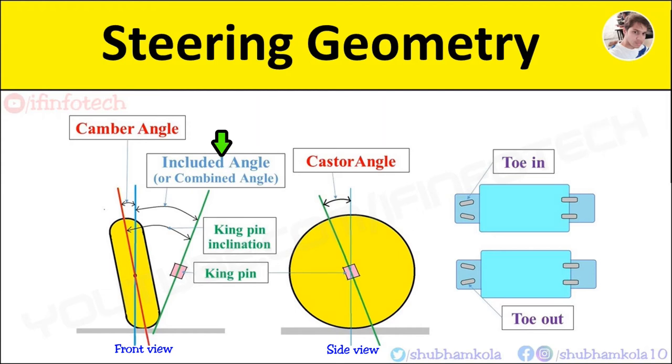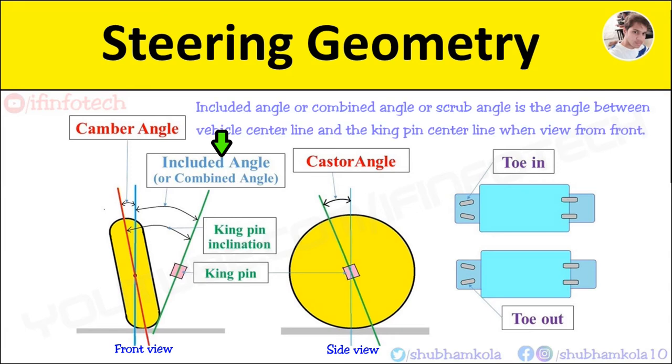Next is included angle or combined angle, or also called as scrub angle. The angle between vehicle center line and kingpin center line when viewed from front is called as included angle or combined angle or scrub angle. It is kept about 9 degrees to 10 degrees.